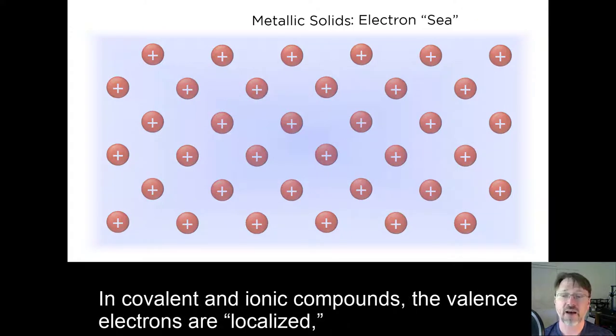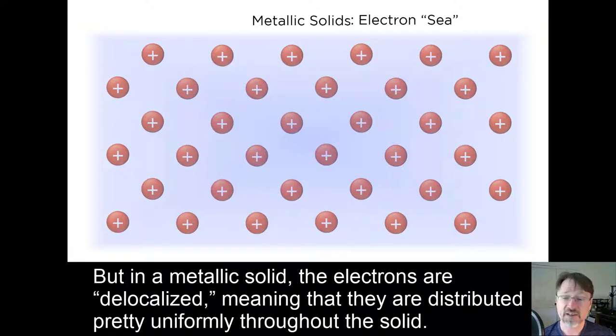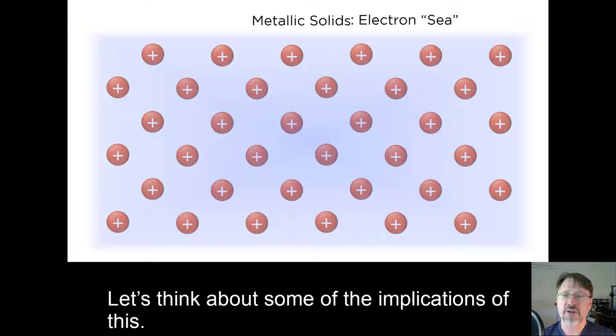In covalent and ionic compounds, the valence electrons are localized because there are some highly electronegative elements holding them in place. But in a metallic solid, the electrons are delocalized, meaning that they are distributed pretty uniformly throughout the solid. Let's think about some of the implications of this.